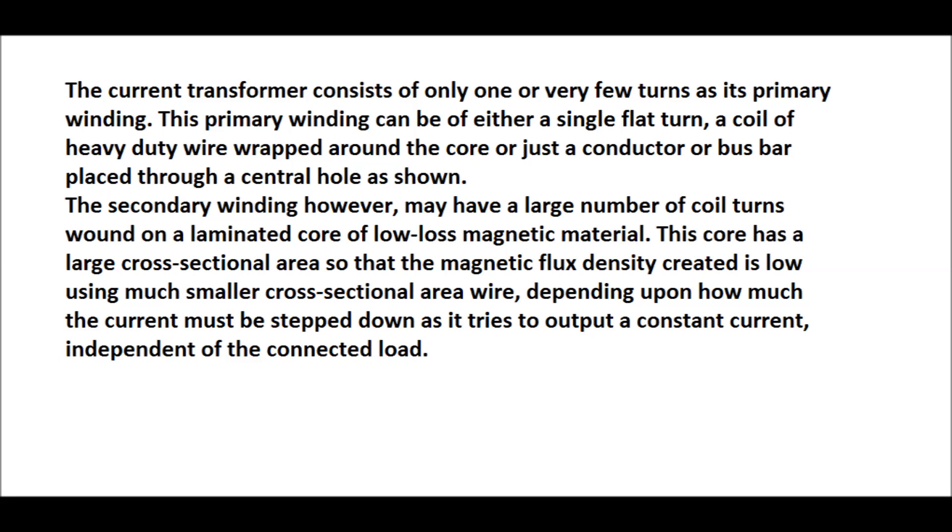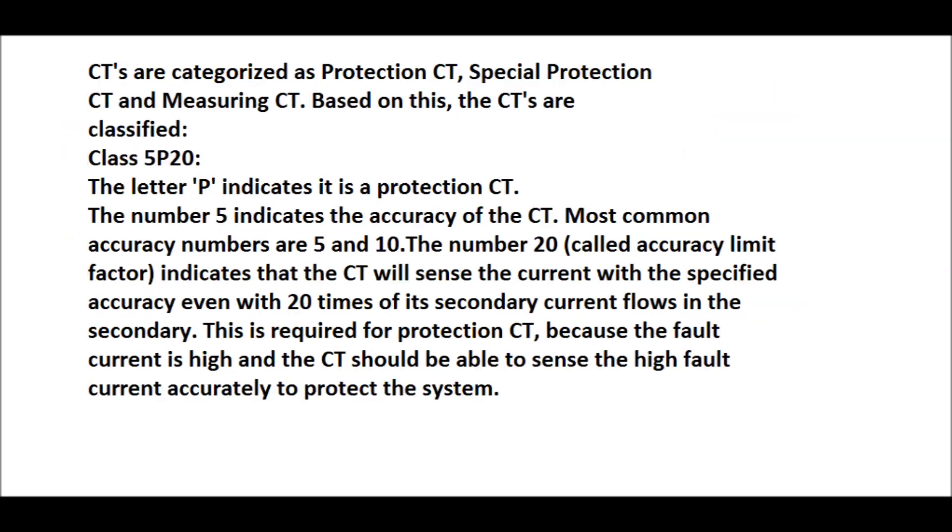The secondary winding, however, may have a large number of coil turns wound on a laminated core of low-loss magnetic material. This core has a large cross-sectional area so that the magnetic flux density created is low using much smaller cross-sectional area wire, depending upon how much the current must be stepped down as it tries to output a constant current independent of connected load. However, the CT secondary always remains shorted through its ammeter or relays.